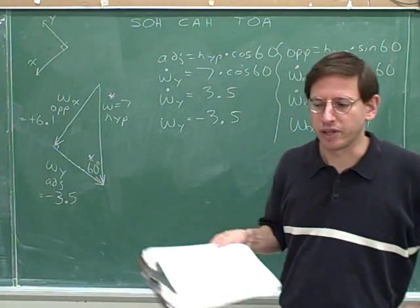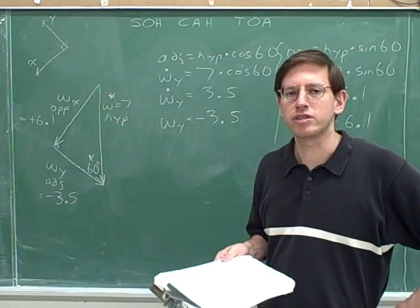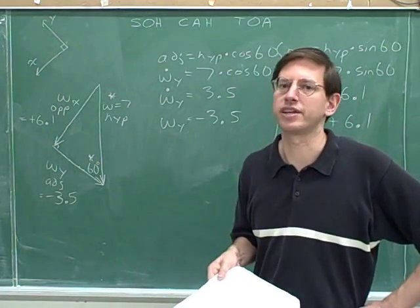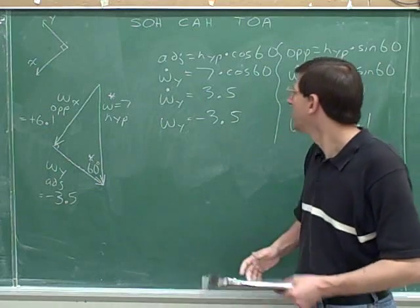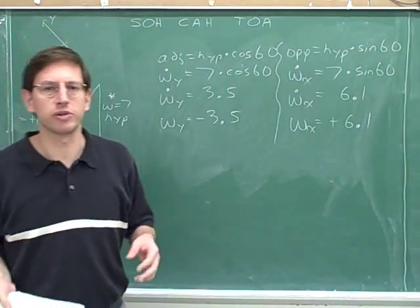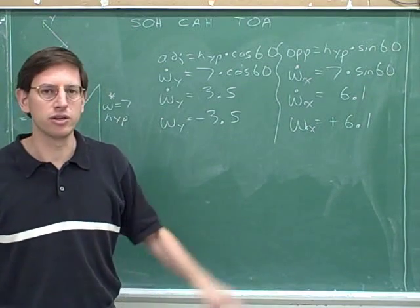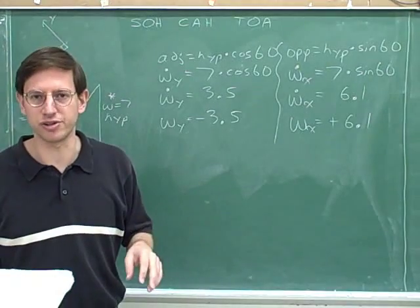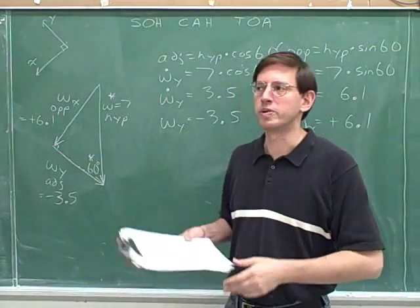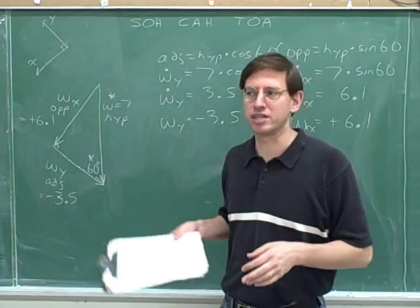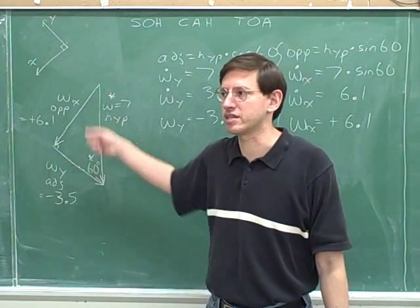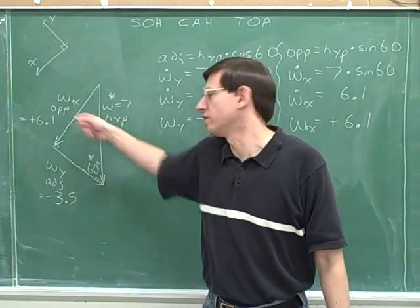In most problems the cosine gives you the x component, but you can't assume that the cosine will always give the x component. In this case, the cosine gave us the y component and the sine gave us the x component. After these videos, you should never assume that cosine always gives the x component — you have to deal with the specific details of each problem. If this problem gave you difficulty, redo it until it doesn't before moving on. Make sure you don't have difficulty drawing the right triangle or putting the correct arrows on the components.